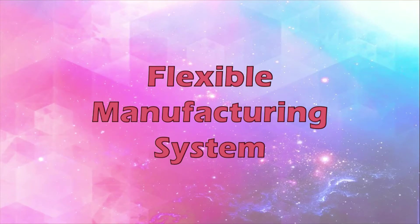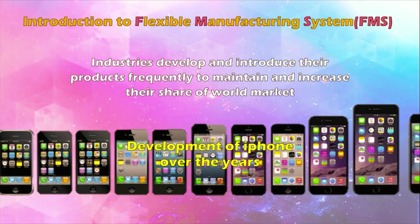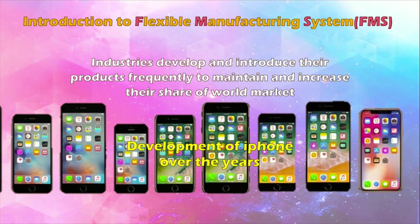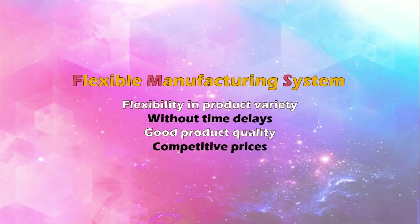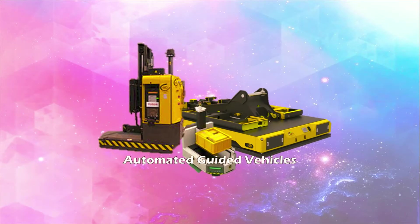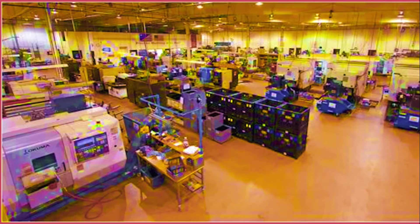Introduction to flexible manufacturing systems. In today's environment, industries are forced to introduce new and improved products more frequently to maintain or increase their share of the world market. The manufacturing facility should be flexible to produce a variety of products without delays and with high quality at competitive prices. Computer control of machines and material handling systems makes the manufacturing facility more flexible. Simple software changes in CNC machines can produce a variety of different parts from the same manufacturing facility.